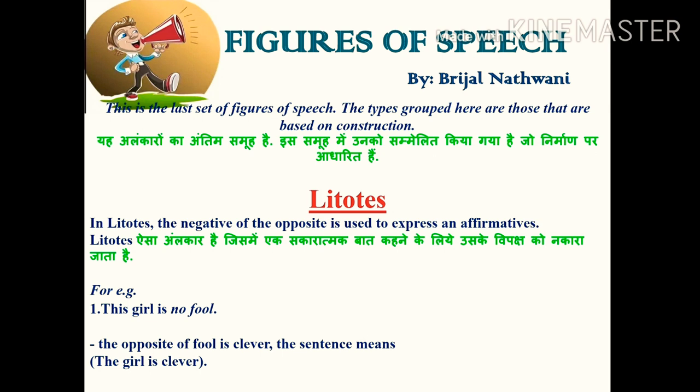This is the last set of figures of speech based on construction. The first one is litotes. In litotes, the negative of the opposite is used to express an affirmative. For example: 'This girl is no fool.' The opposite of fool is clever, so 'no fool' means clever — the sentence means: the girl is clever.